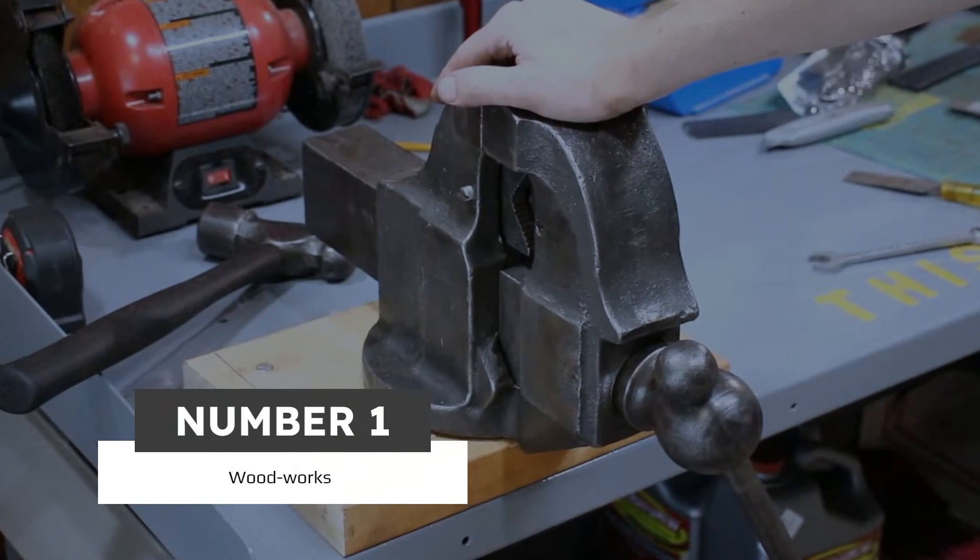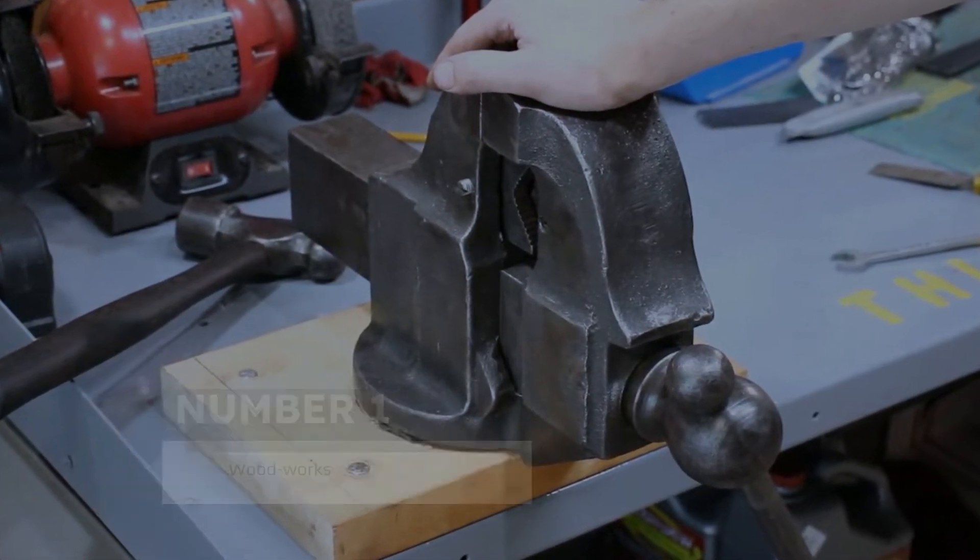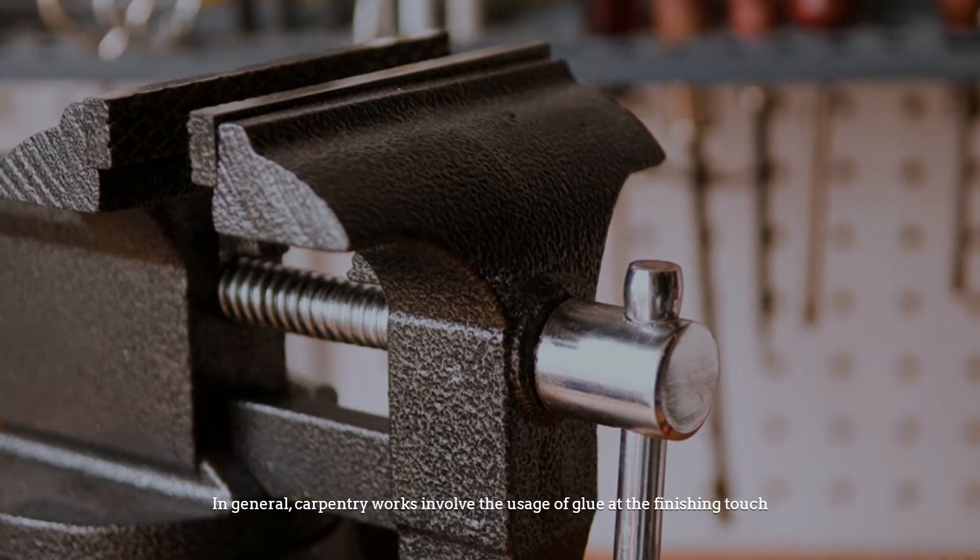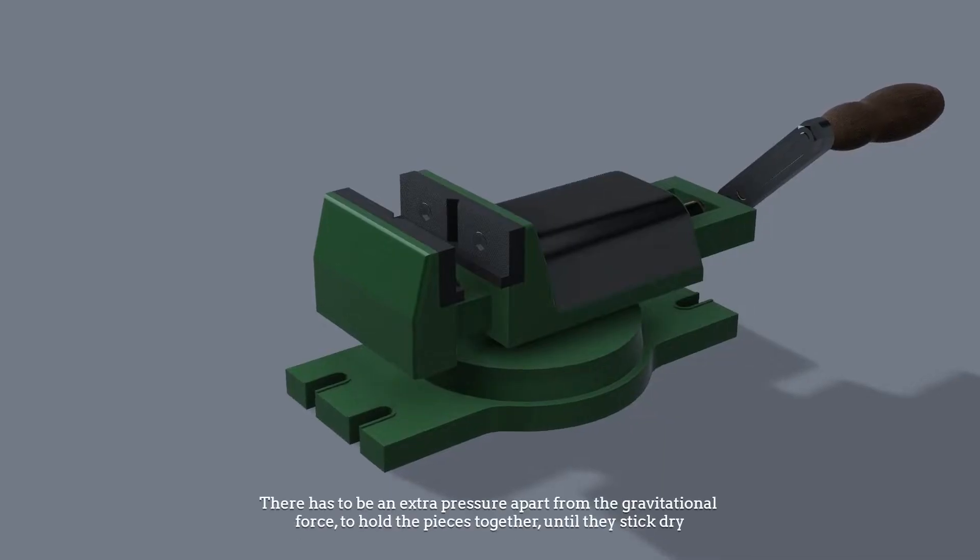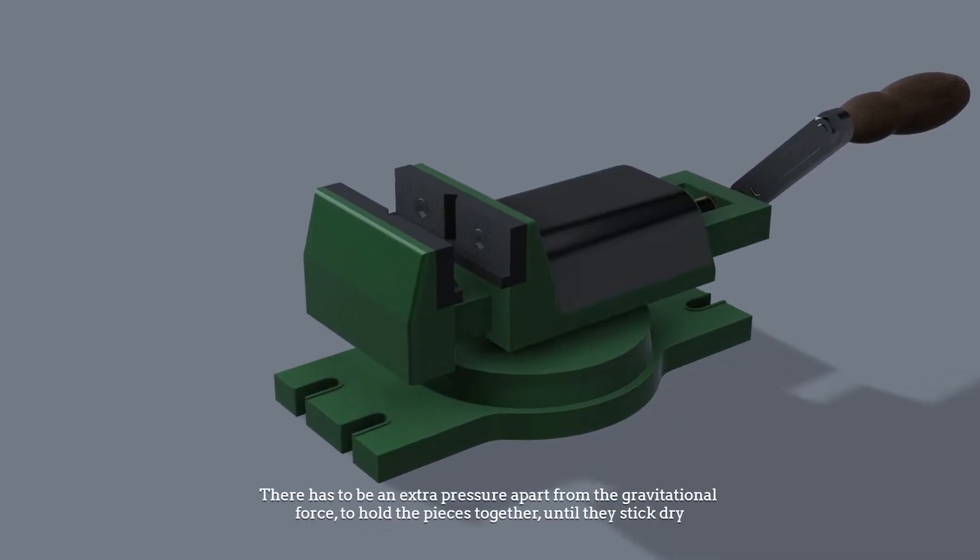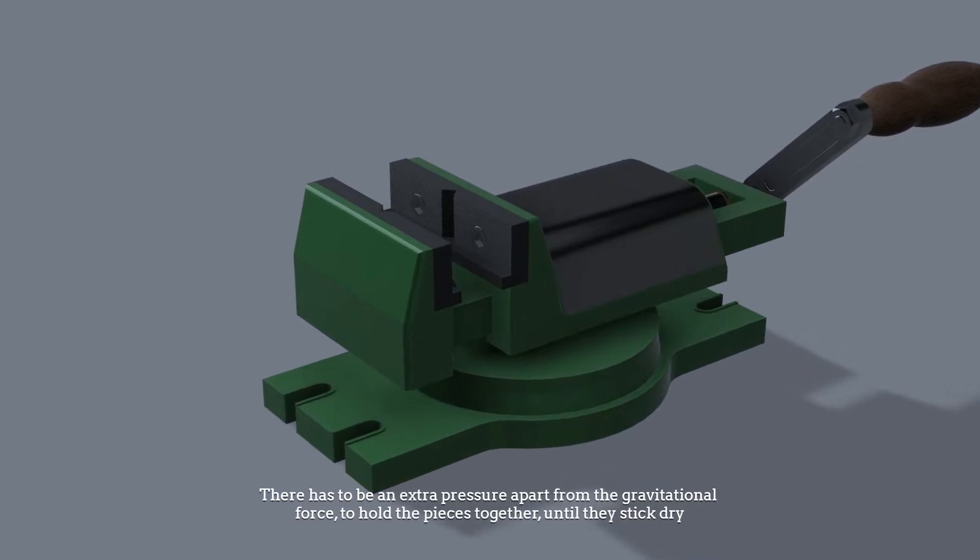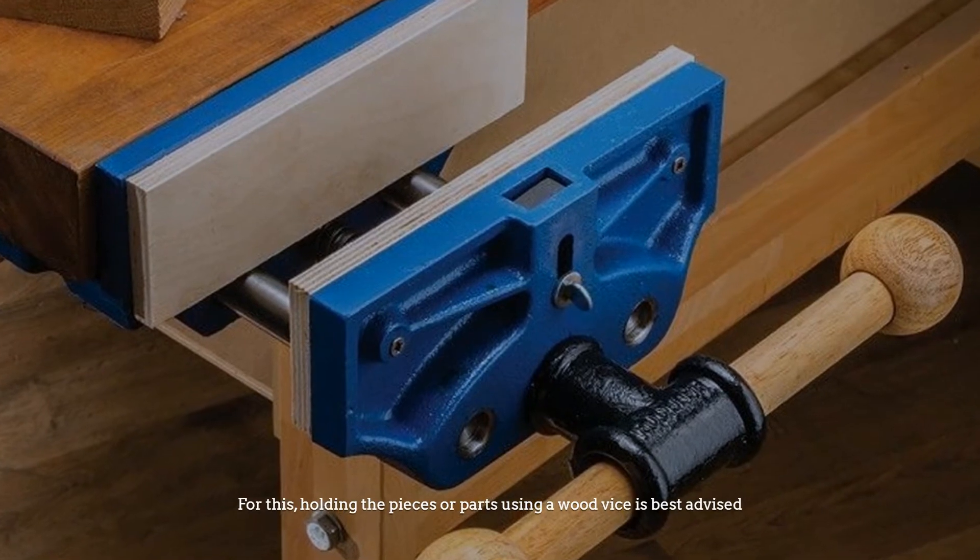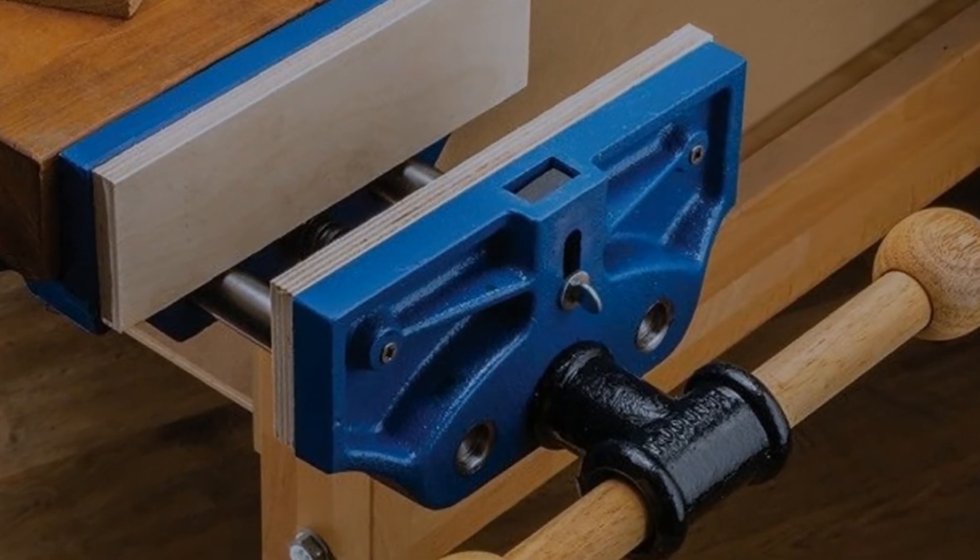Number 1. Most popular. Woodworks. In general, carpentry works involve the usage of glue at the finishing touch. There has to be an extra pressure apart from the gravitational force to hold the pieces together until they stick dry. For this, holding the pieces or parts using a wood vise is best advised.